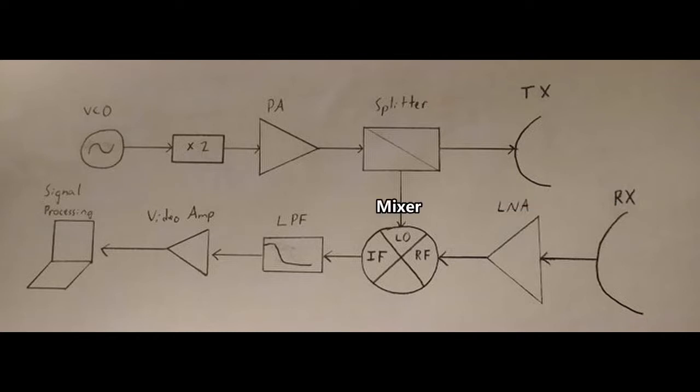So the mixer takes the difference between the local oscillator signal and the radio frequency signal, and what's left is the intermediate frequency signal, which is really just the Doppler shift that's due to the movement of the target. And then we take that IF signal and send it through a low pass filter and a video amplifier before we process the signals.